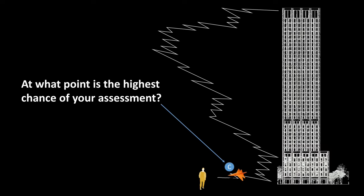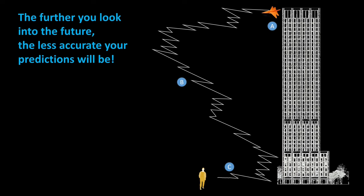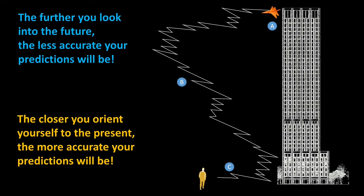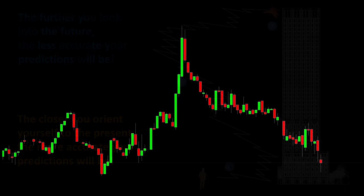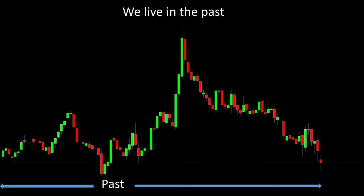The correct answer would be point C, as this is where you can best determine the possible landing radius. The further you look into the future, the less accurate your predictions will be. The closer you get to the present, the more accurate your predictions will be.